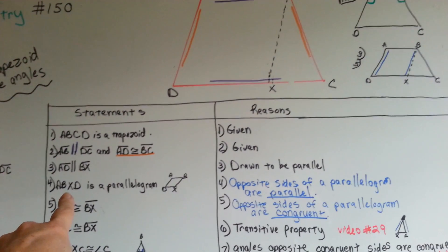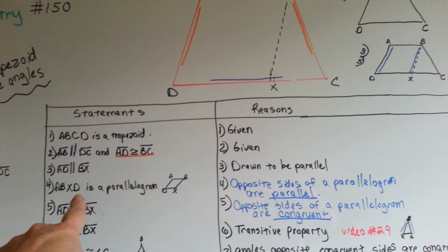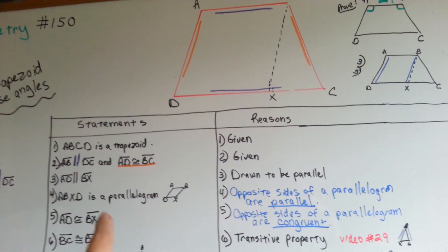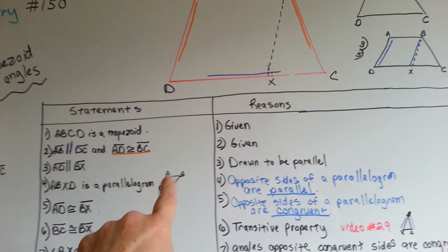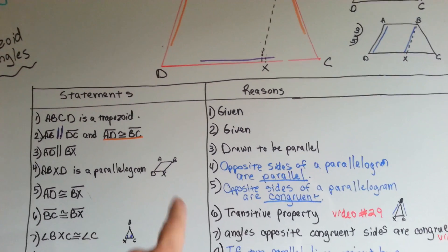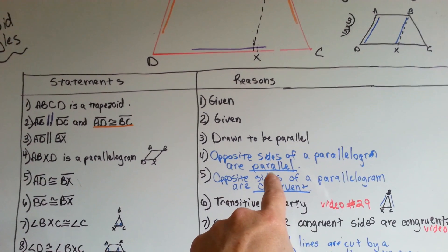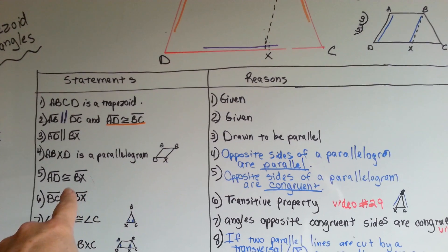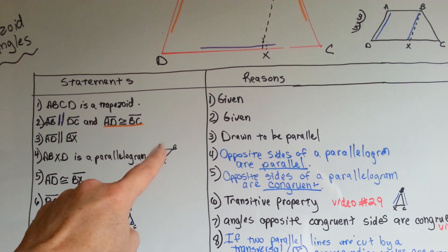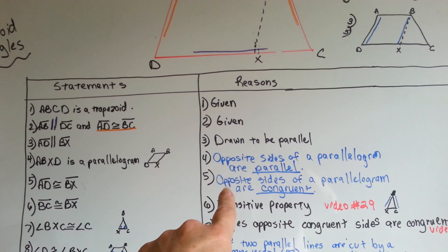So ABXD is a parallelogram — kind of slanty there. Those sides are parallel, those are parallel, so it's a parallelogram. The reason: opposite sides of a parallelogram are parallel. Therefore, AD is congruent to BX, because opposite sides of a parallelogram are congruent.